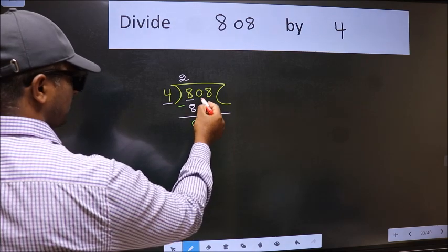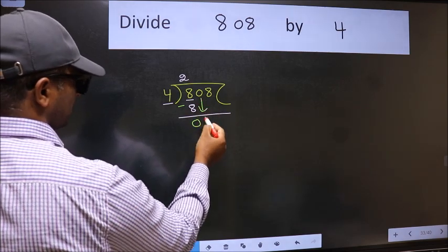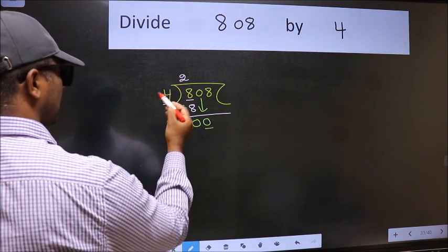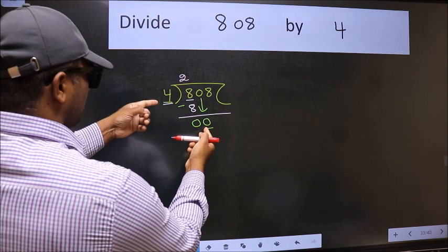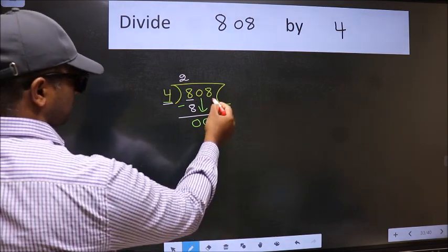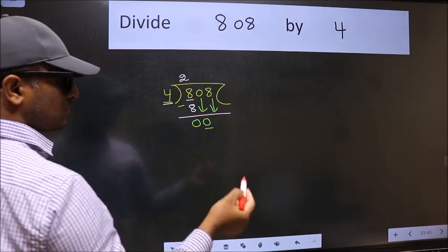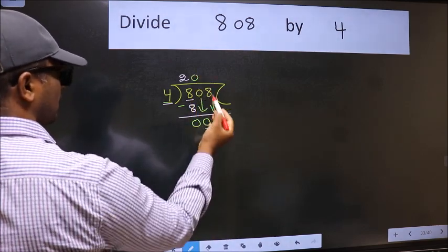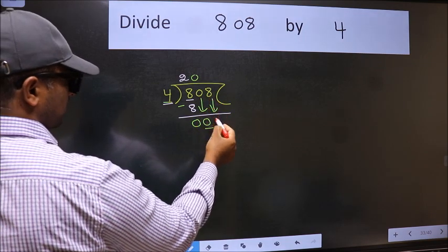After this, bring down the beside number. So 0 down. Now here we have 0 and here 4. 0 is smaller than 4, so we should bring down the second number. The rule to bring down the second number is we should put 0 here. Then only we can bring this number down.